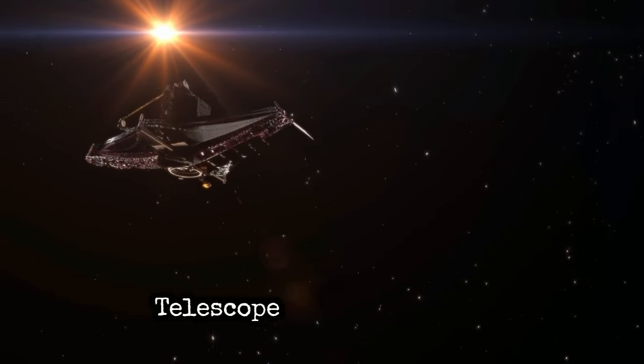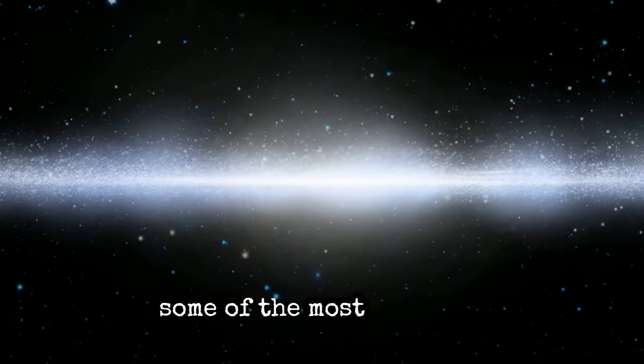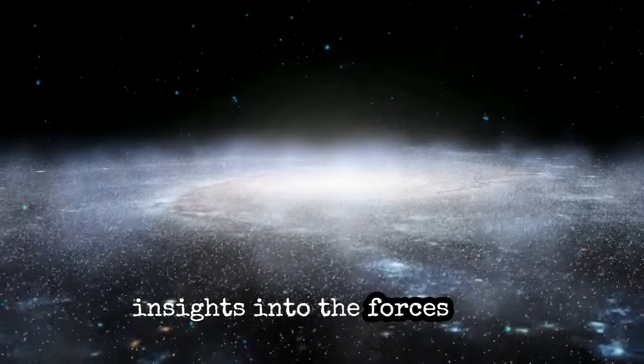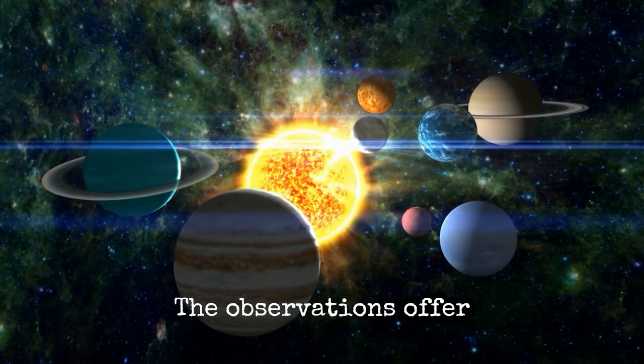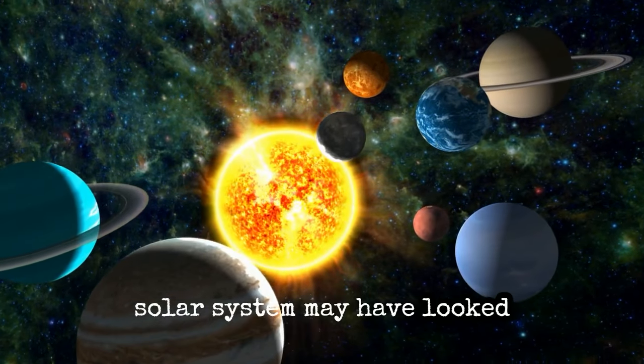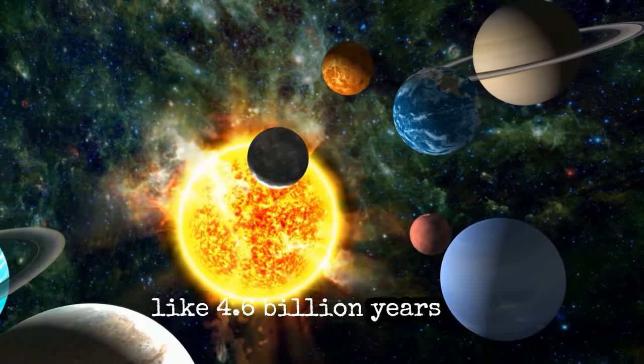used the James Webb Space Telescope (JWST) to obtain some of the most detailed insights into the forces that shape protoplanetary disks. The observations offer glimpses into what our solar system may have looked like 4.6 billion years ago.